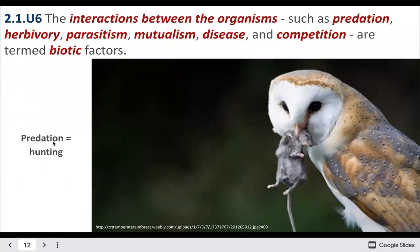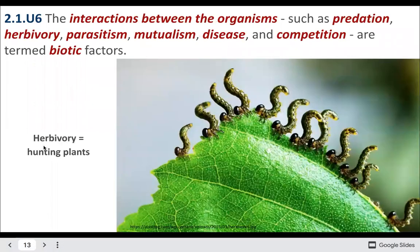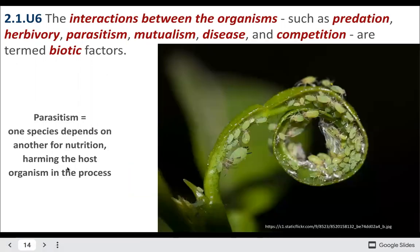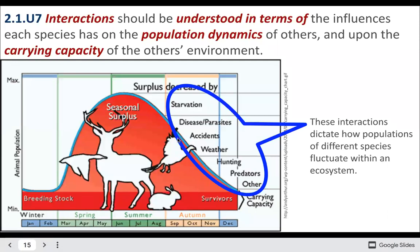There are various ecological interactions: predation, herbivory, and parasitism — where one species takes energy from another without necessarily killing it but definitely harming it. All of these interactions affect carrying capacity and are what cause population numbers to decrease.